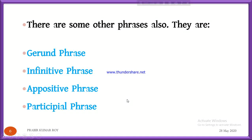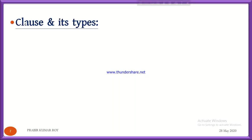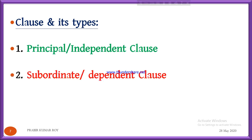But our today's topic is on phrase and clause, so in our next lesson we will discuss gerund phrase, infinitive phrase, appositive phrase, participial phrase, etc. Now let us come to clause. A clause has a subject and a verb. There are two types of clauses: one is principal or independent clause, and another is subordinate or dependent clause.